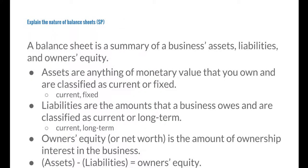Explain the nature of balance sheets. A balance sheet is a summary of a business's assets, liabilities, and owner's equity. Assets are anything of monetary value that are owned and are classified as current or fixed. A current asset is cash or anything that can be converted into cash in a year, while a fixed asset is something used over a period of time to operate your business, like property and equipment.